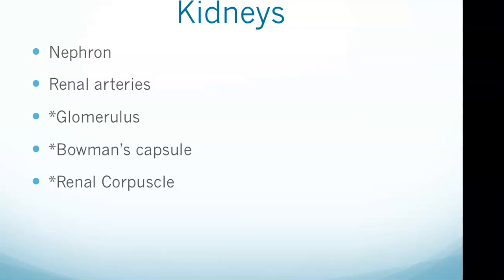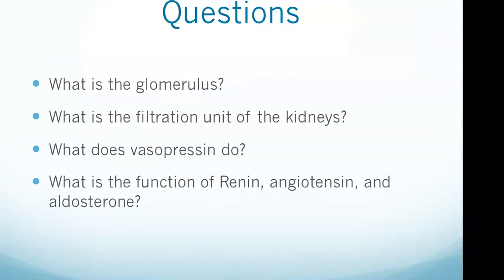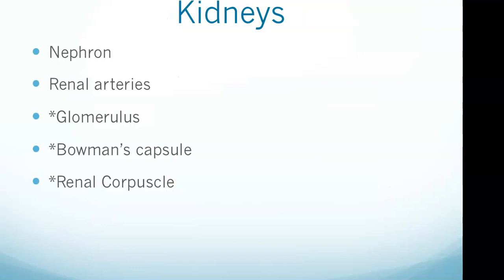To answer the question of what the glomerulus is: it is a network of capillaries that contain pores, making it highly permeable to certain ions like sodium and potassium. For the filtration unit of the kidneys: Bowman's capsule surrounds the glomerulus and together they form the renal corpuscle, which is the filtration unit. Bowman's capsule is found at the end of the nephron.